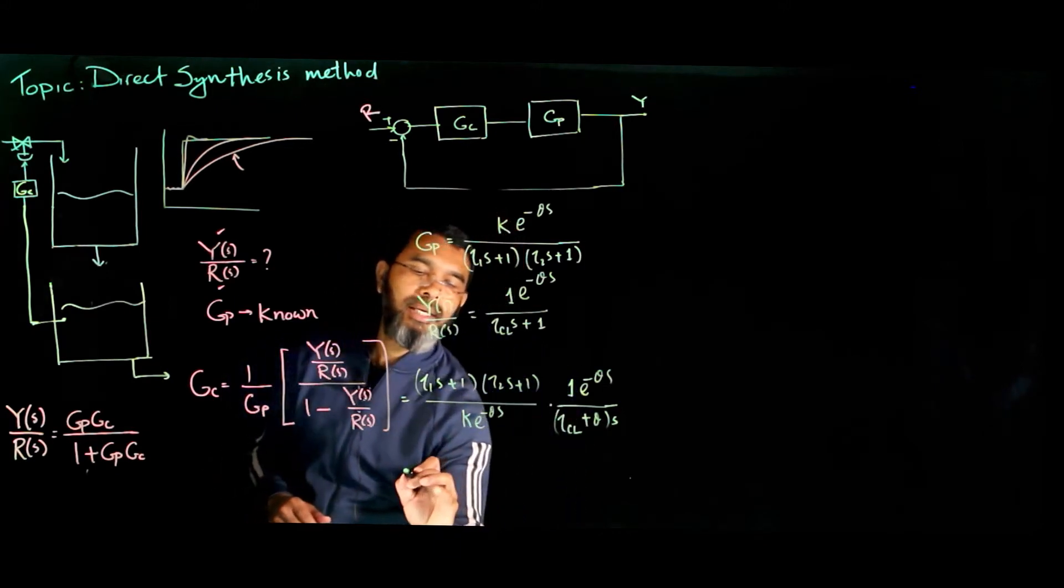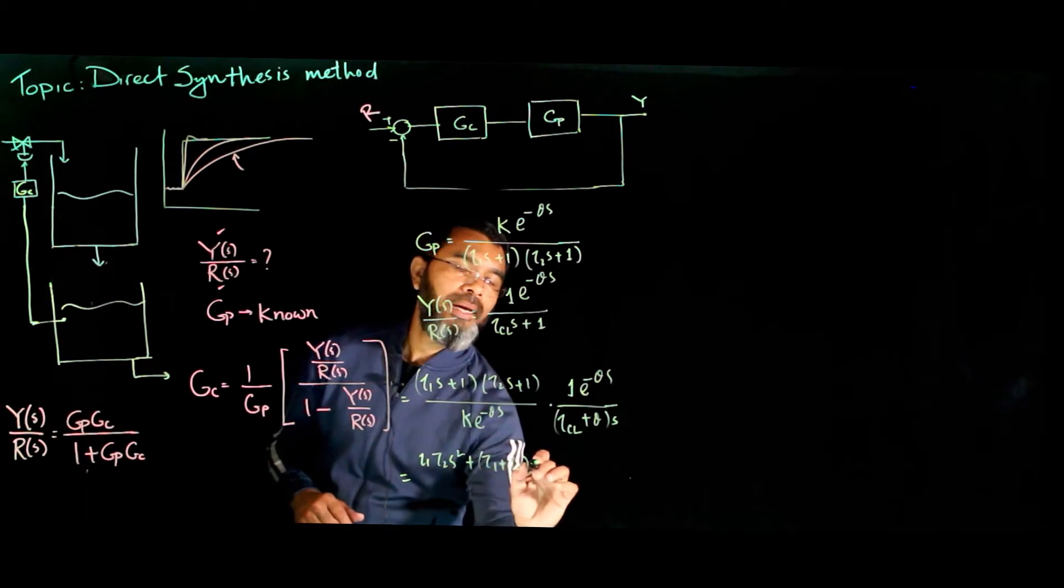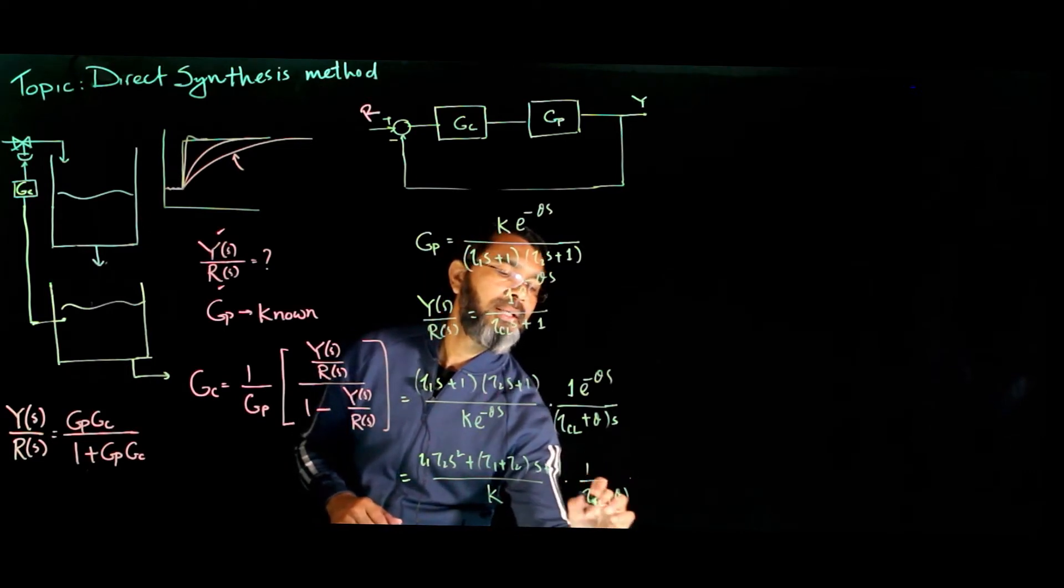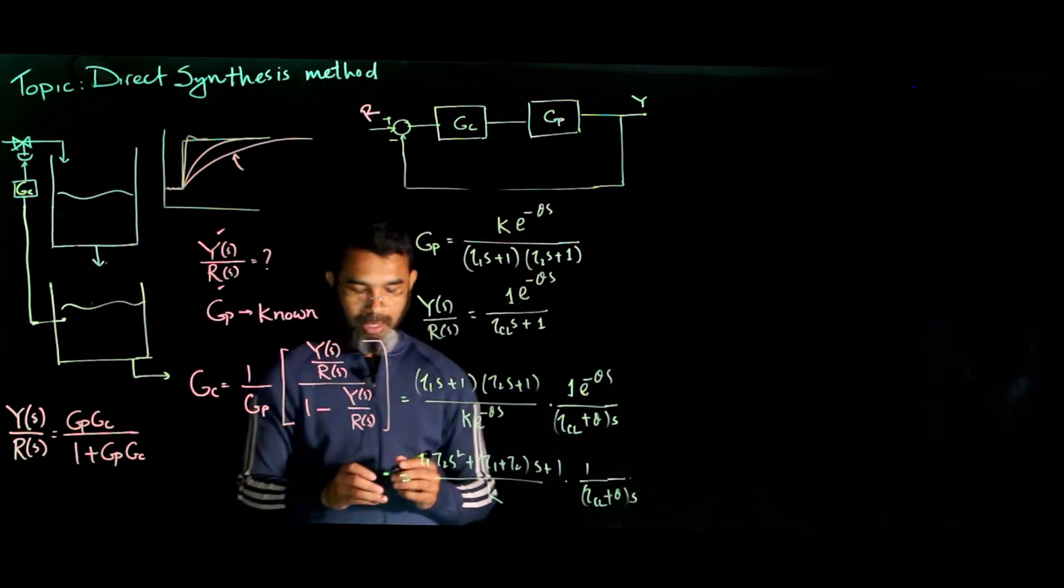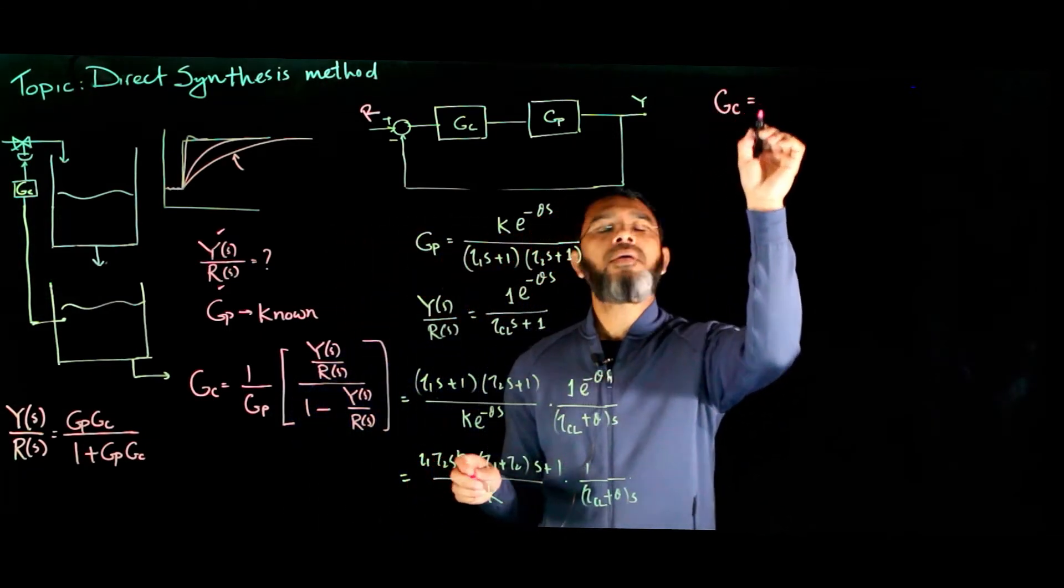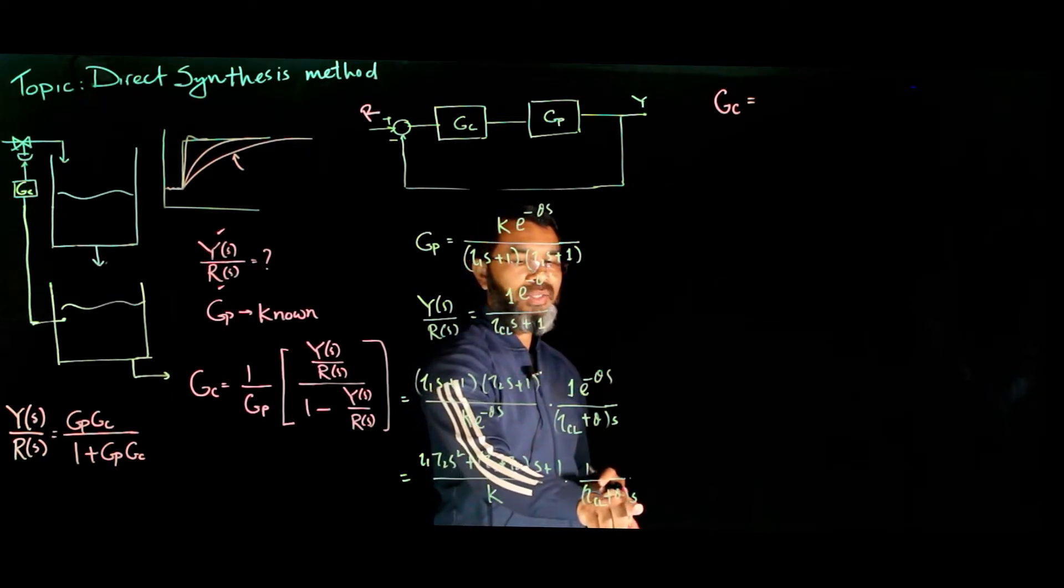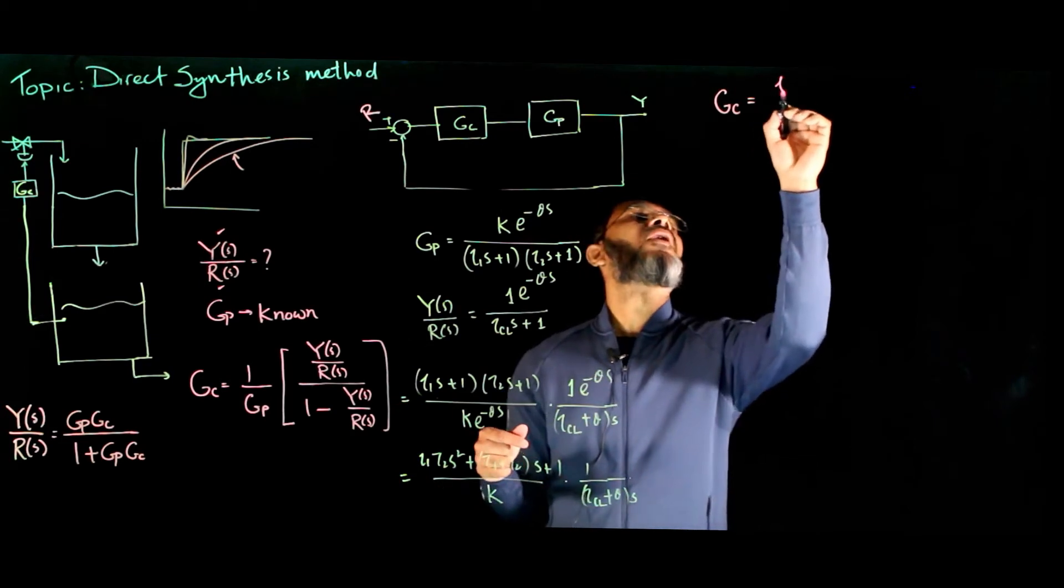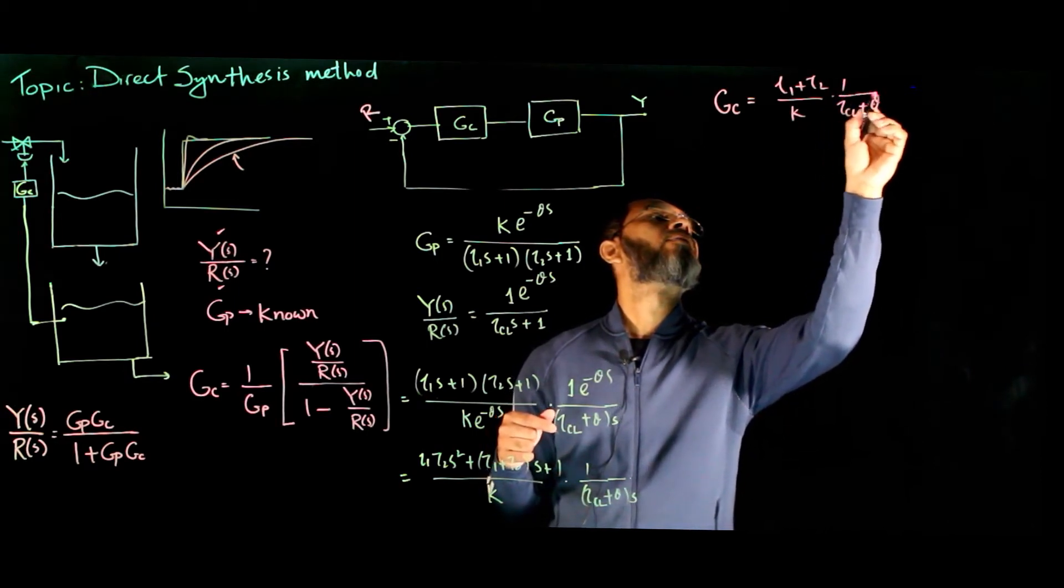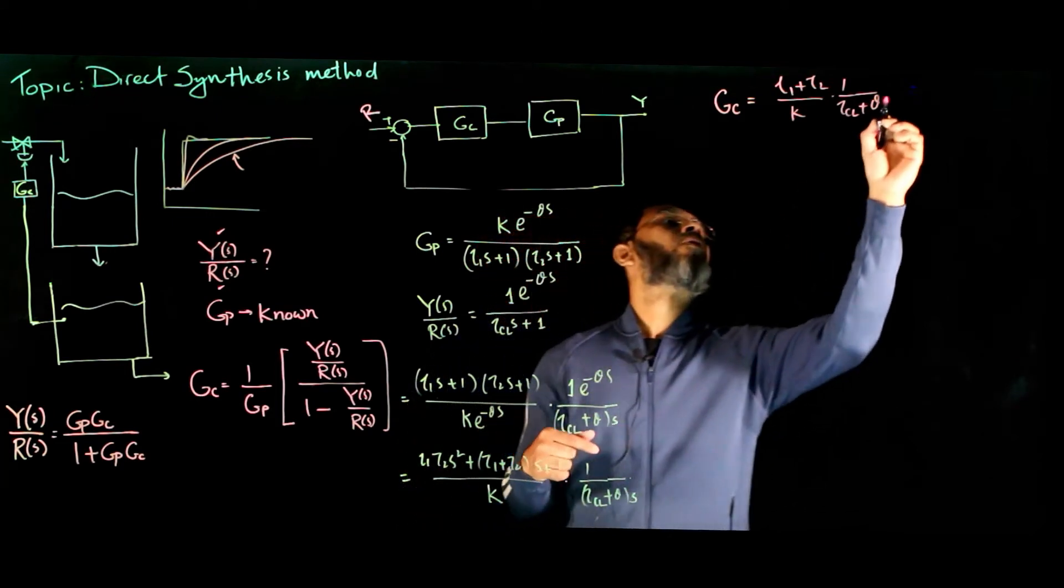Now these two will get cancelled out, and if you write down this equation it will be simply tau 1 tau 2 s squared plus tau 1 plus tau 2 s plus 1, over k, times 1 over tau cl plus theta s. Now I'll write this in an expanded form. I'll write first this middle term because that s and s gets cancelled out.